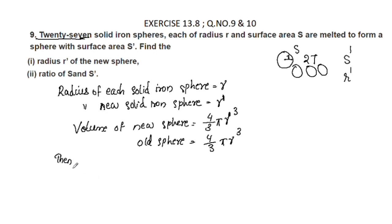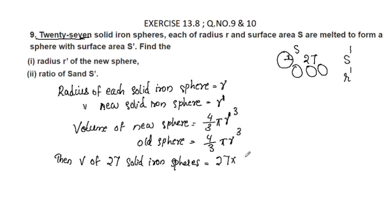The volume of 27 solid iron spheres is equal to 27 times 4/3 pi r cubed. The volume of 27 solid iron spheres is equal to 36 pi r cubed.